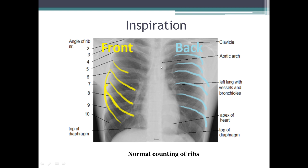In full inspiration, the diaphragm will overlie anteriorly along the fifth to sixth intercostal spaces and posteriorly around the tenth rib in the mid-clavicular line. The degree of inspiration is important: if fewer ribs are visible the radiograph is not in full inspiration; if more ribs are visible the film is hyperinflated. With poor inspiratory effort, the heart may appear larger, basal shadowing may be seen, and the trachea can deviate towards the right side.